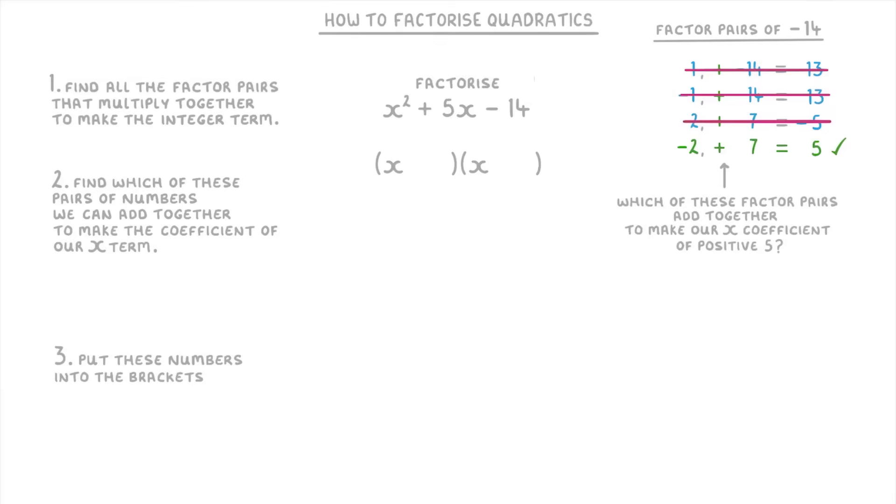So because our factors are minus 2 and positive 7, we put take away 2 in one bracket and add 7 in the other one. And that's it, we've factorized the quadratic.